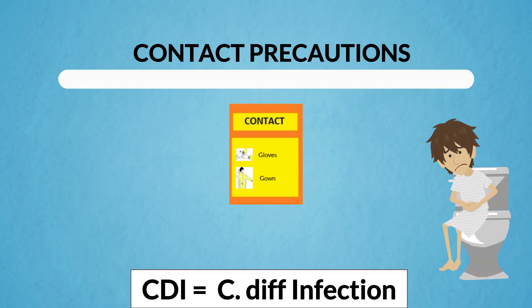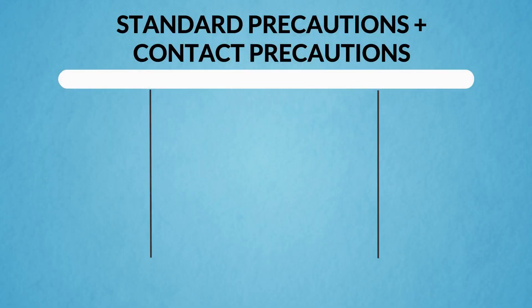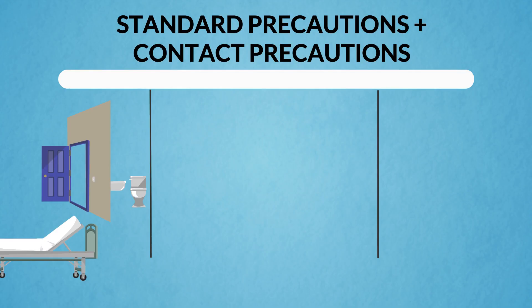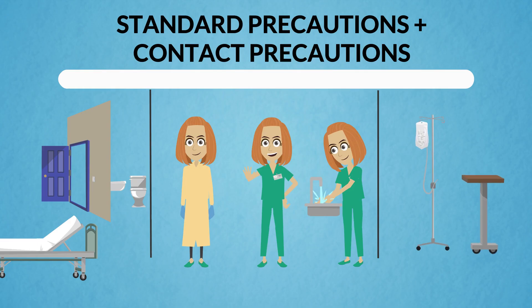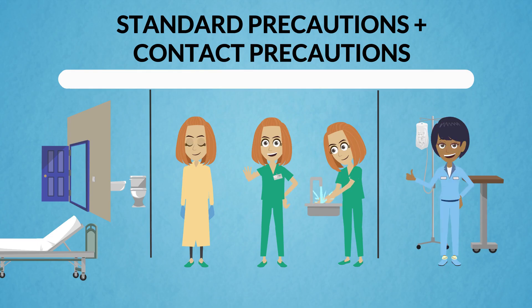Some facilities may require individuals to be in contact precautions until they are discharged or have completed their CDI treatment. In hospitals, contact precautions added to standard precautions include placing the patient in a single room with a dedicated bathroom when possible, staff members applying gloves and gowns before entering the room and removing them and completing hand hygiene before exiting, and dedicating equipment to the isolated patient when possible.